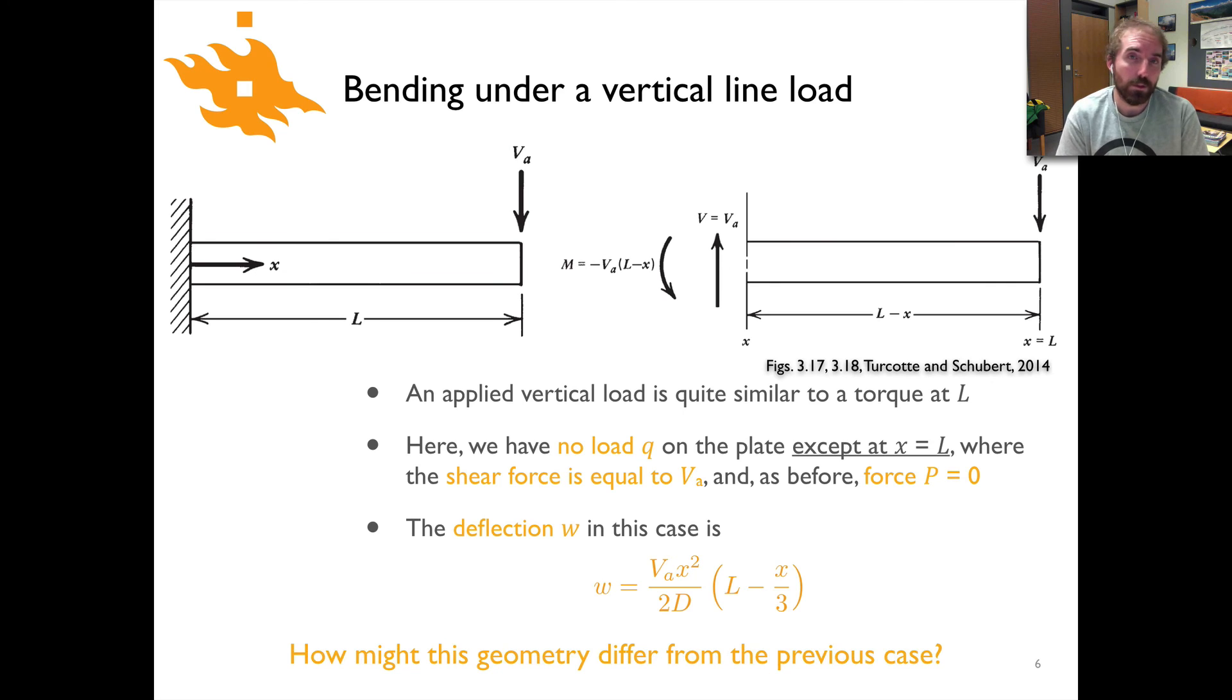Okay, well let's see what you came up with. In this case, we have something similar where we're going to say our deflection W should be something like a parabola because we have an x squared term here. But we also then multiply by the length minus x over three. What that's going to do is for very small values of x, this term is going to be small, and as x gets bigger, this term will get a little bit smaller.